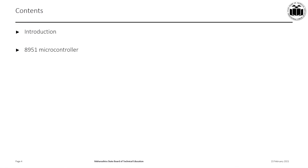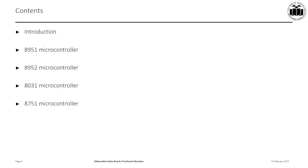What are the contents that we are covering today? First, it will be the brief introduction, then the features of 8951 microcontroller, features of 8952 microcontroller, 8031 microcontroller and the 8751 microcontroller. And in the end, we will compare the 8051 family members on various parameters such as the memory, the timers, the interrupts and so on.